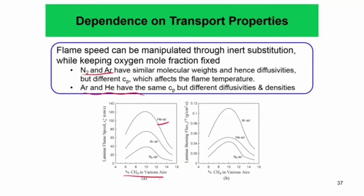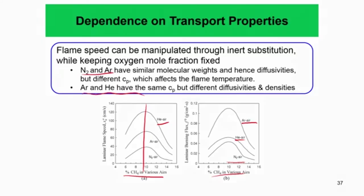For CH₄ in various oxidizer mixtures — considering equivalence ratio equal to 1 — and for CH₄ at different percentages in different diluents, we see the laminar flame speed and the burning flux. Nitrogen gives the least burning flux, then helium-air, then argon-air shows the highest burning flux. The density also plays a role, but the trend demonstrates how transport properties, through C_p and λ, affect the laminar flame speed and burning flux.